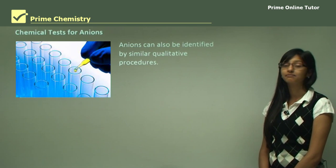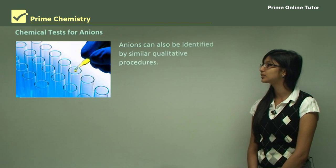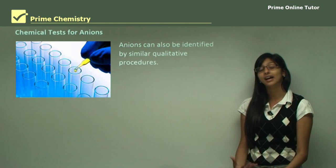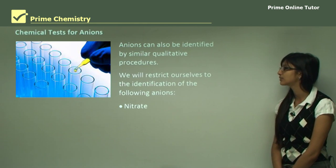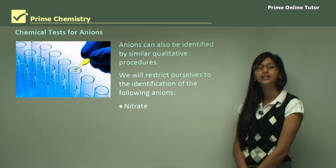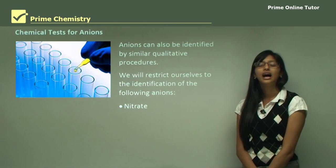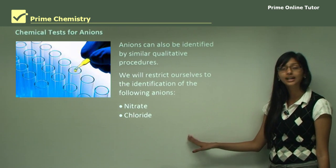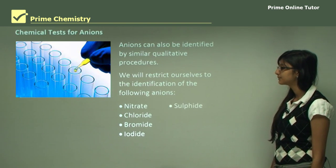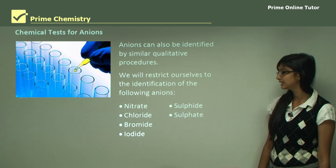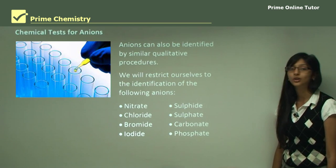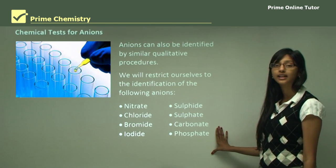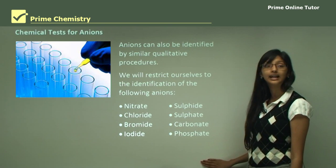Anions can be identified in a similar procedure to cations: you have two solutions, you add them together, and a precipitate forms that identifies what type of anion is present. We will restrict ourselves to the following anions as specified by the syllabus: nitrate, chloride, bromide, iodide, sulfide, sulfate, carbonate, and phosphate. These are the eight anions we will look at in detail.